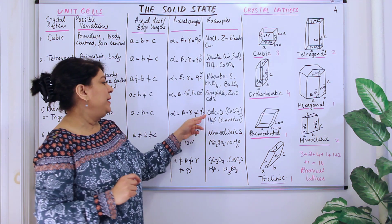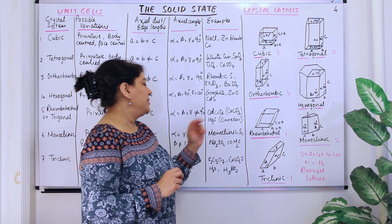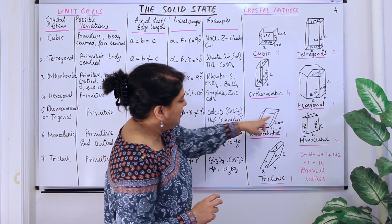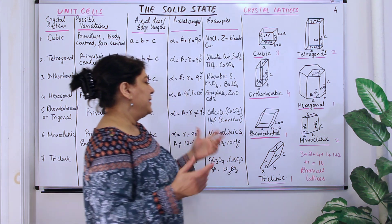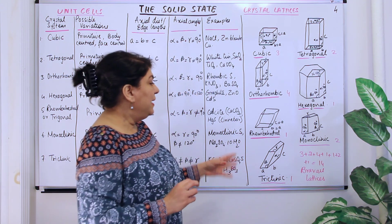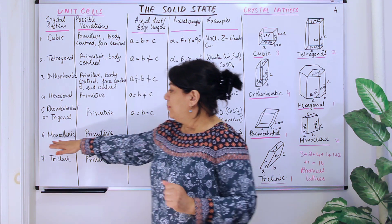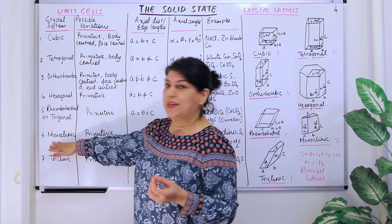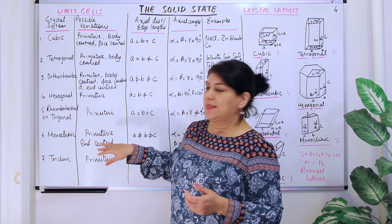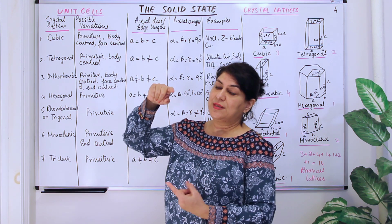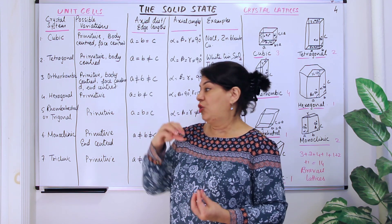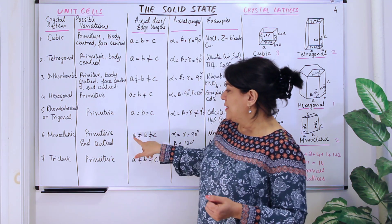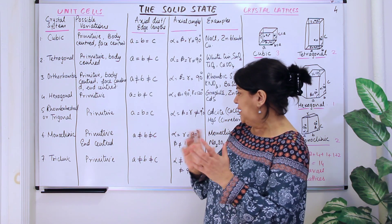Examples of rhombohedral crystals are calcite (calcium carbonate) and cinnabar (mercuric sulfide). The rhombohedral appears as a tilted cube with only the primitive arrangement. The next kind is monoclinic — you may have heard of monoclinic sulfur. The monoclinic arrangement has two possibilities: primitive and end-centered, where the centers of two opposite faces are also occupied.